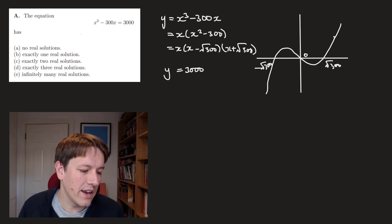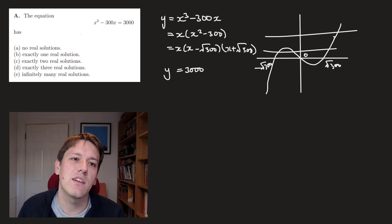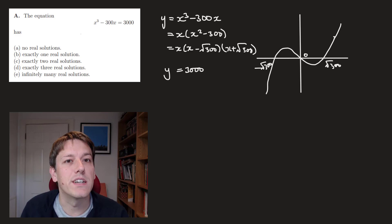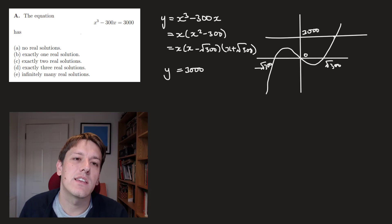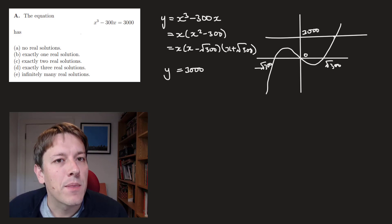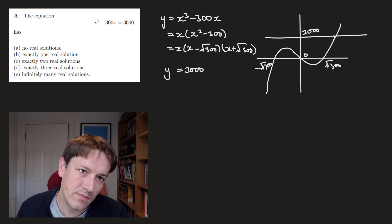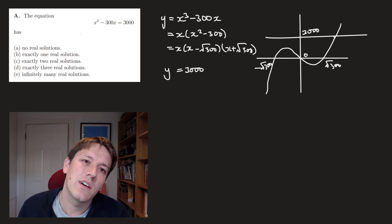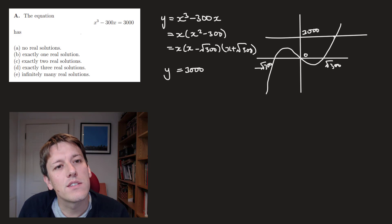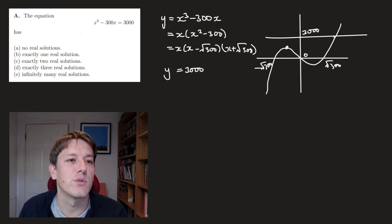You should be able to see pretty quickly that this is a positive cubic and its graph then looks something like this. It's got roots at 0, root 300, and minus root 300. And at the right-hand side, I'll just sketch y equals 3,000. It's just a horizontal straight line. Now, the question is, does this horizontal straight line pass through here, through here, through here? And that'll tell us how many roots there are because the number of roots will be the number of intersections of these two graphs.